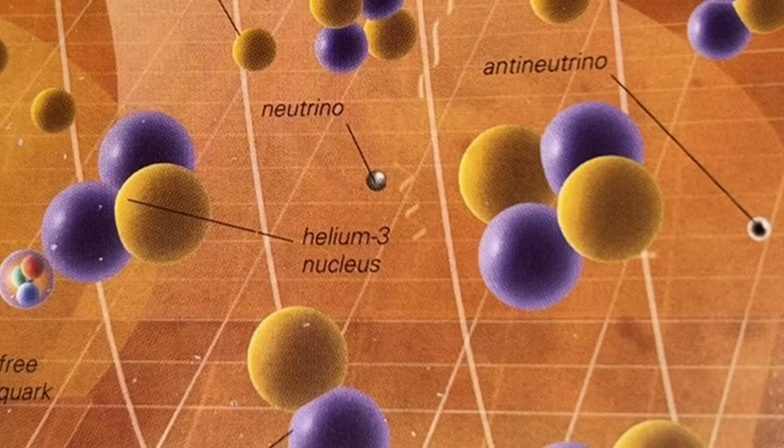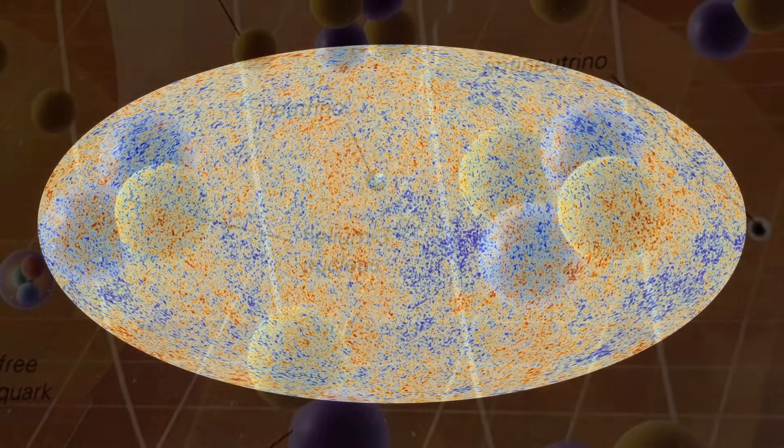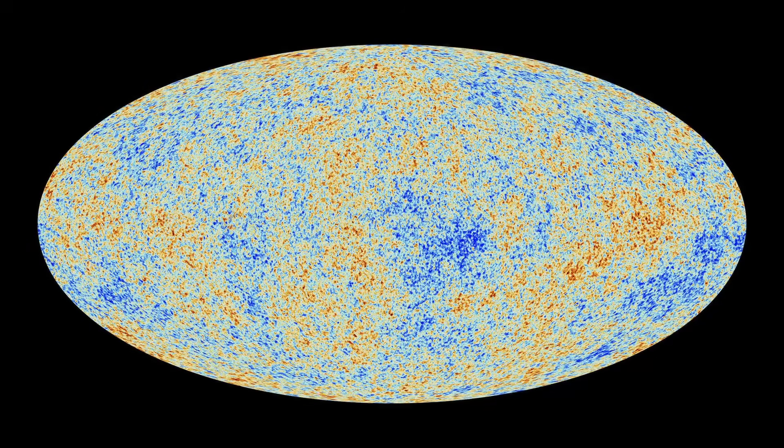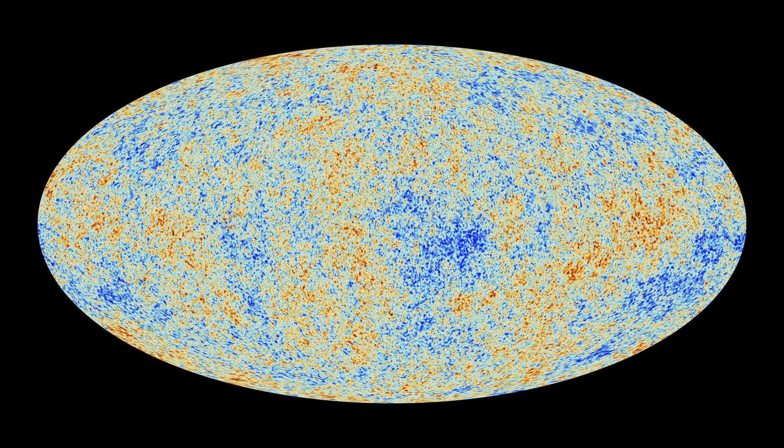Neutrinos decoupled from the rest of matter. This meant that they could travel freely through space. This formed the cosmic neutrino background and is analogous to the cosmic microwave background, which was the strongest initial evidence of the Big Bang detected by scientists in the 1960s.